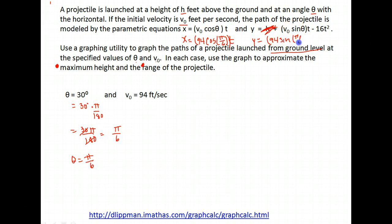So then I have my v naught which again was 94 feet per second, sine of the angle, the angle remains the same so pi over 6 t minus 16t squared. So those are my two equations. I'm now going to open up the graphing calculator so we can plug those in, and again what we'll be looking for are the maximum height and the range of the projectile.